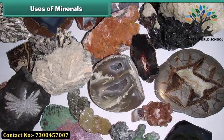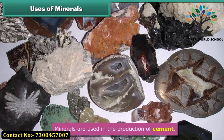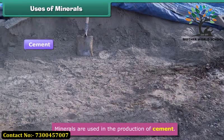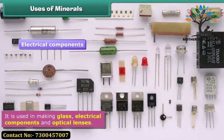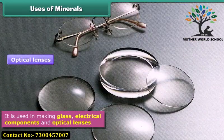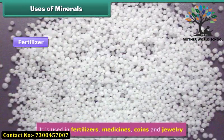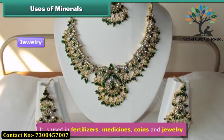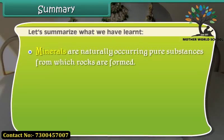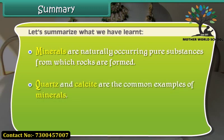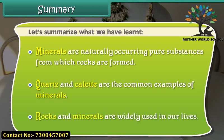Uses of minerals: Minerals play an important role in our lives. Minerals are used in the production of cement. They are used in making glass, electrical components, and optical lenses. These are also used in fertilizers, medicines, coins, and jewelry. Minerals are naturally occurring pure substances from which rocks are formed. Quartz and calcite are common examples of minerals. Rocks and minerals are widely used in our lives.